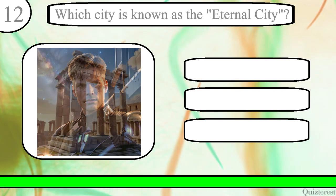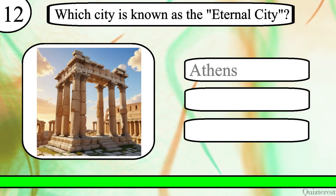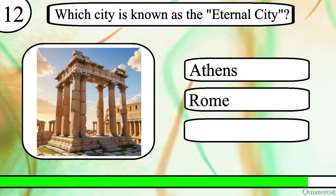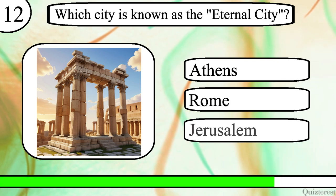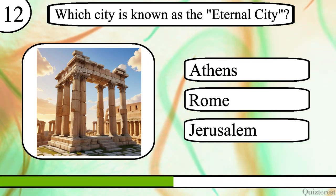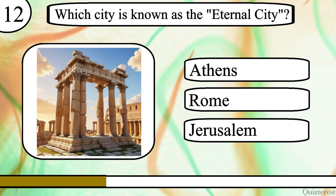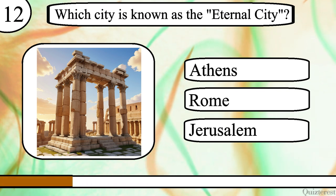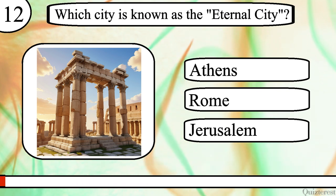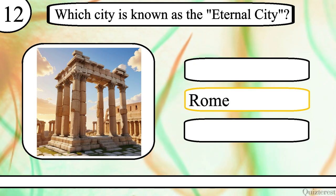Question 12. Which city is known as the Eternal City? Athens, Rome or Jerusalem? The correct answer is Rome.